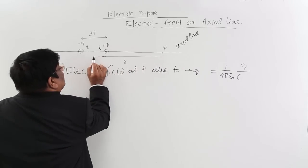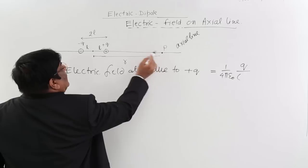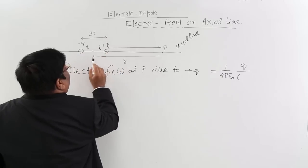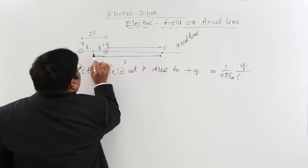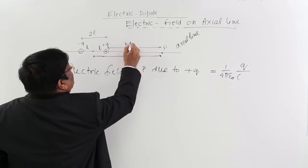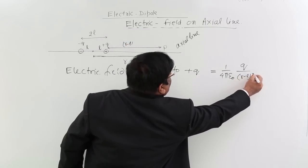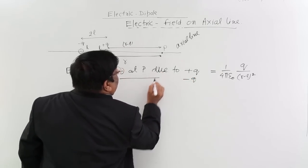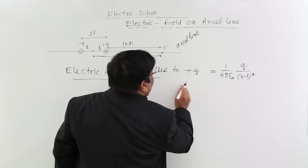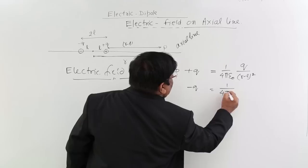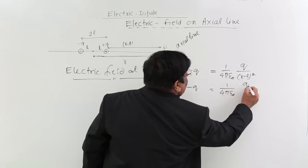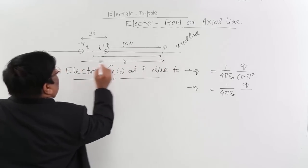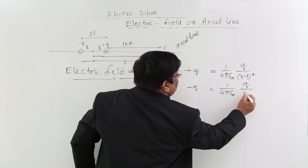Now what is the distance? R is the distance from the center to point P, but the charge +Q is not at distance R from P. If the distance from center to P is R, and the distance from center to +Q is L, then the distance from +Q to P is R minus L, so the denominator is (R − L)². Similarly, the electric field at P due to minus Q is 1 upon 4π ε₀ times Q upon (R + L)², since the distance from −Q to P is R plus L.